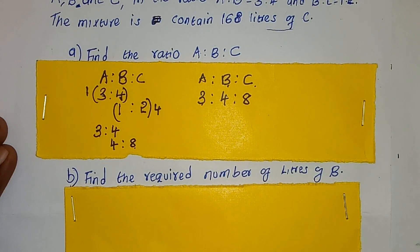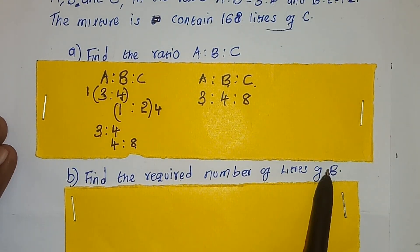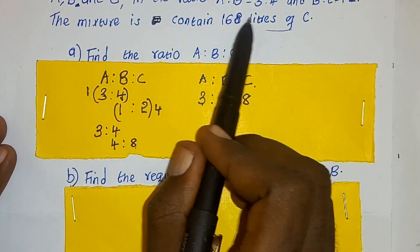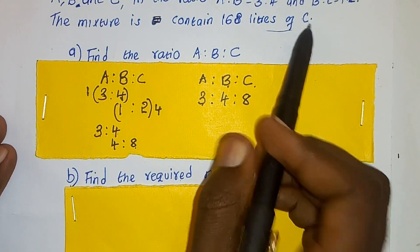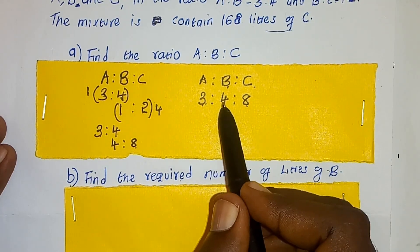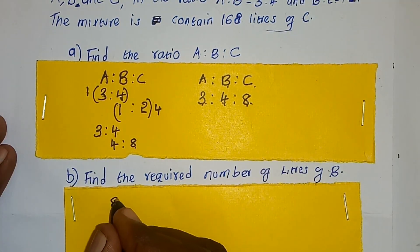Let us go now to part B which says, find the required number of liters of B. In the question we were told the mixture contains 168 liters of C, whereby the ratio of C is 8 out of total 3 plus 4 is 7, 7 plus 8 is 15. Therefore, we say the ratio of C, which is 8 of a total 15 is equal to 168.